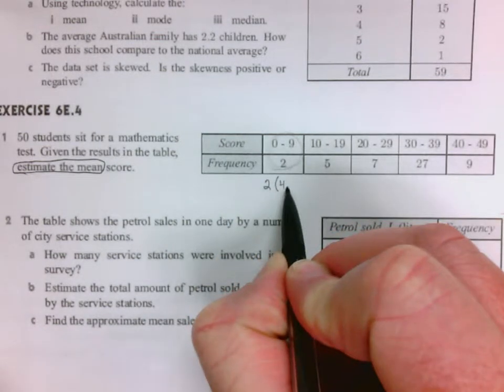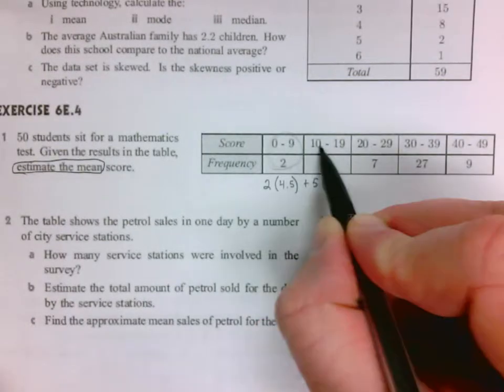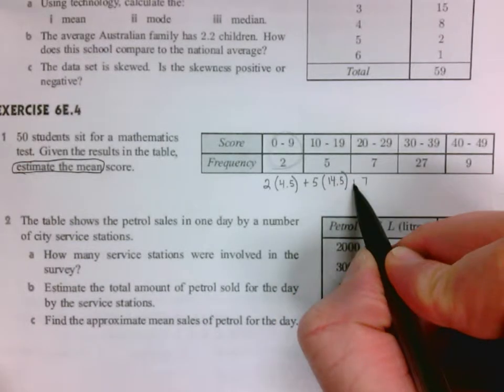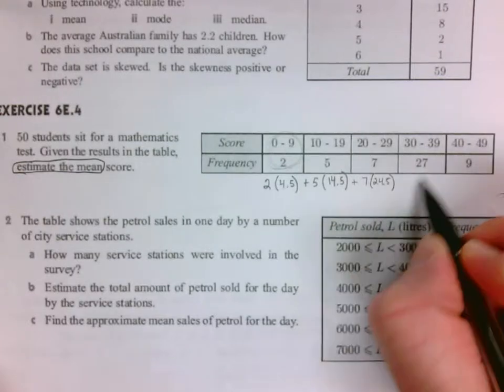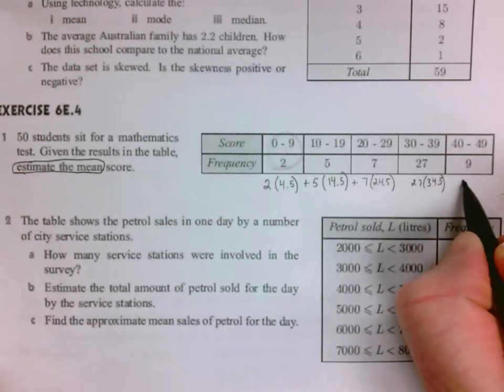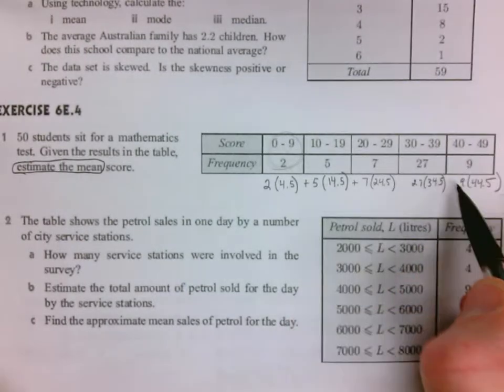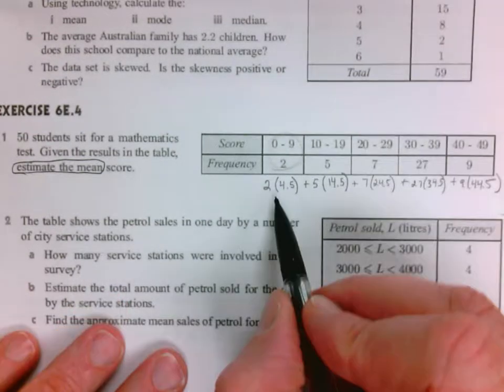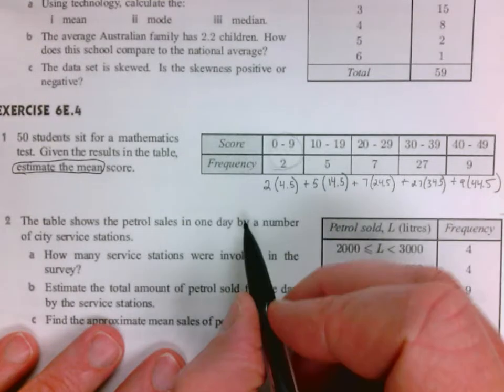We're going to assume there are two values in this interval. We don't know if they're 1 or 2 or 9. We're going to assume they're the midpoint. So we're going to assume there are two values that are 4.5, five values in here that are 14.5, seven values that are 24.5, 27 values that are 34.5, and nine values that are 44.5.